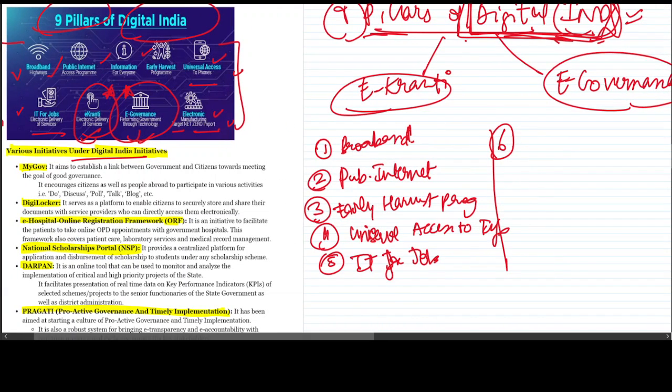Fifth was IT for jobs. Sixth was the most important, which was e-kranti. Seventh was e-governance. Then eighth and ninth pillars.